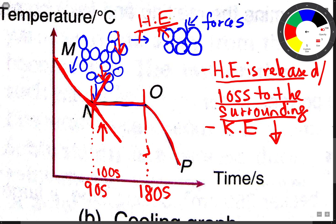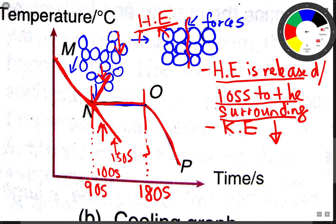Heat energy is released by the particles because they need to form stronger forces. So at 150 seconds, the heat energy released by the particles balances the heat lost to the surrounding — that's why the temperature remains constant throughout this part.